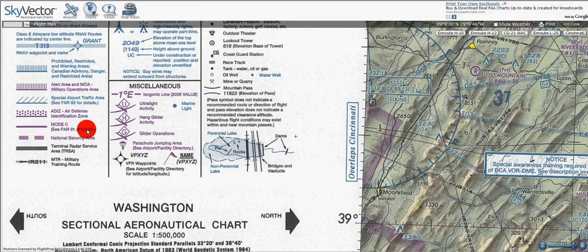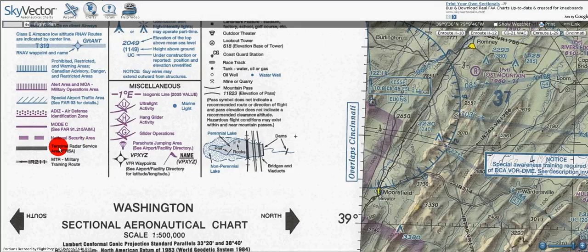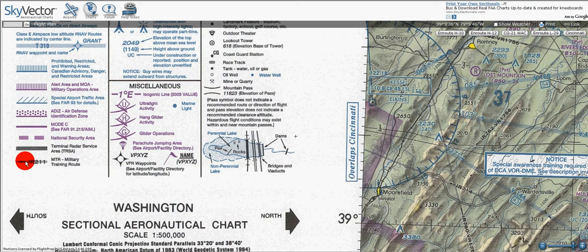Here we've got a very bold dashed magenta line for national security area. Here we've got a terminal radar service area or TRSA, given by gray. And military training routes or MTRs are given by the lighter gray line and the route identifier.